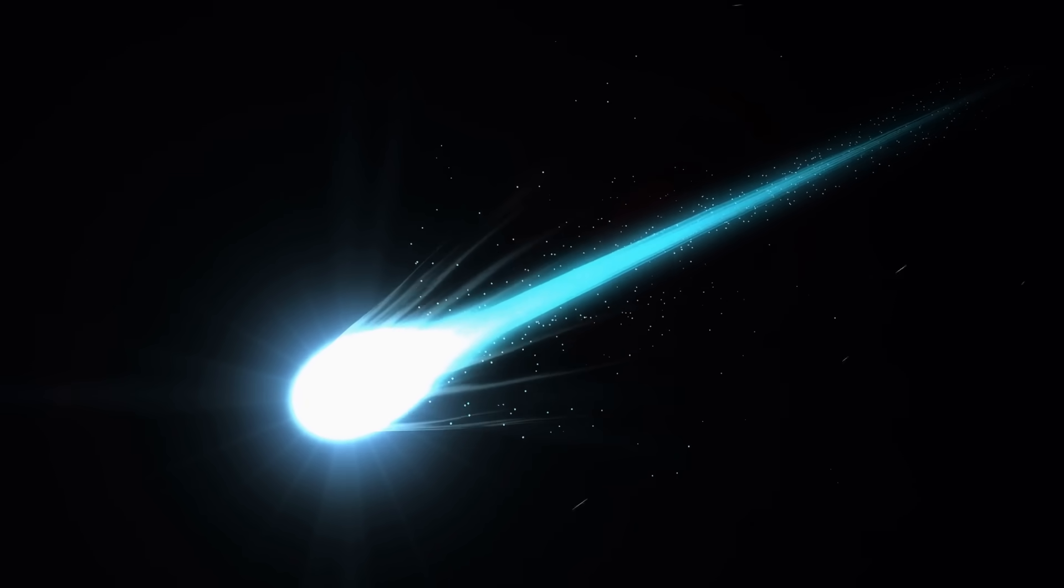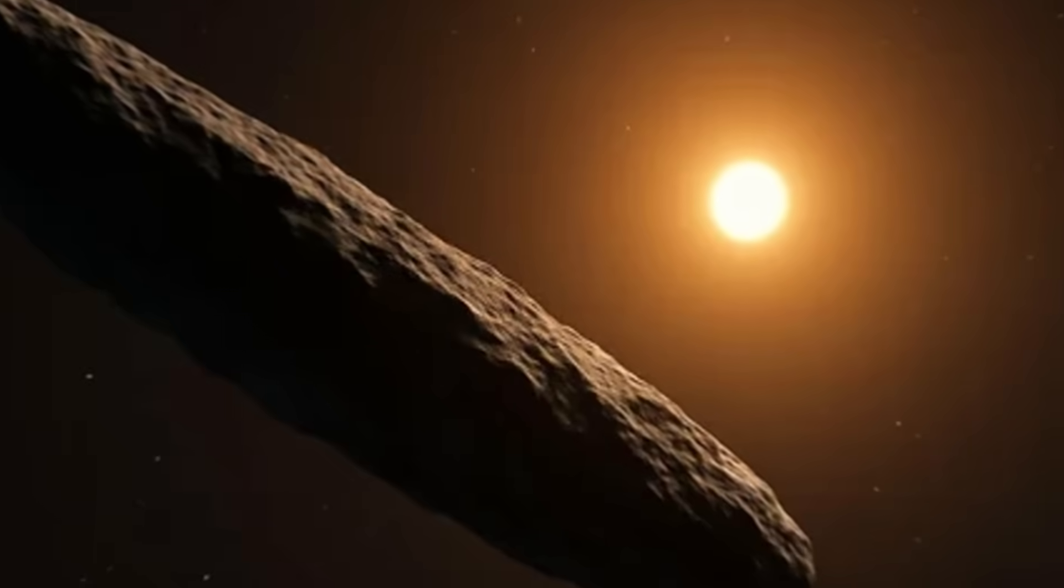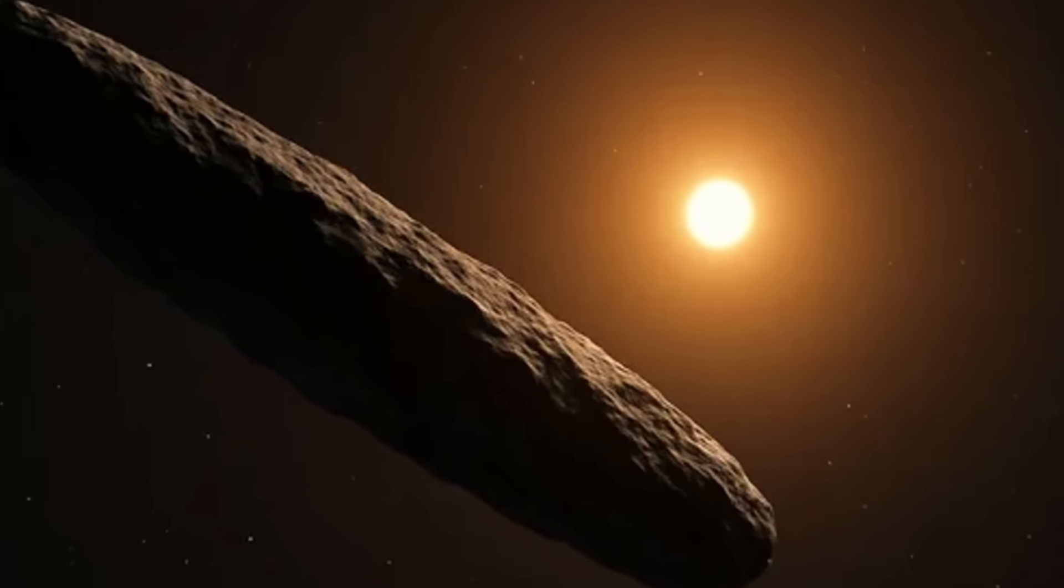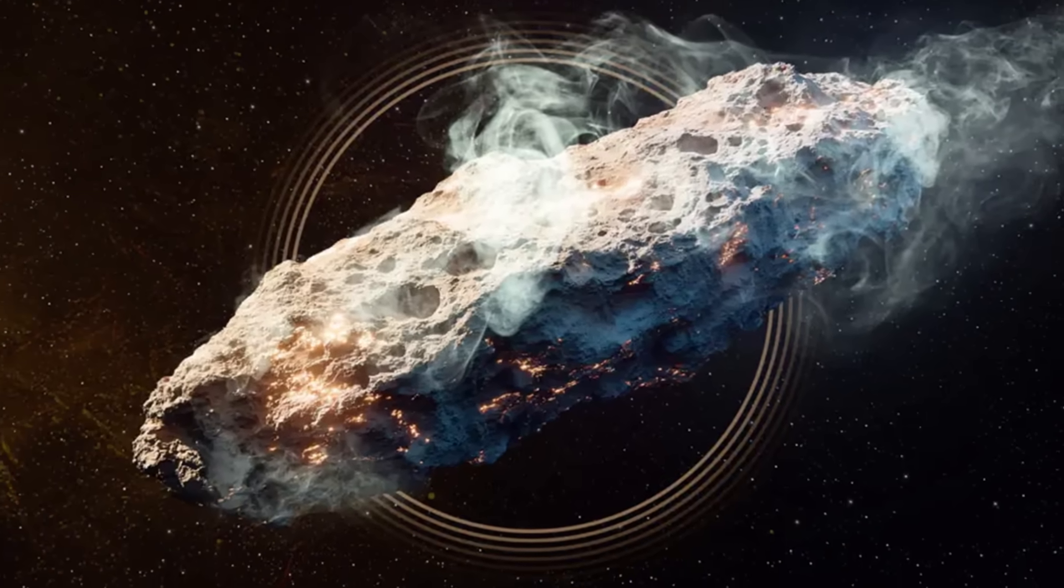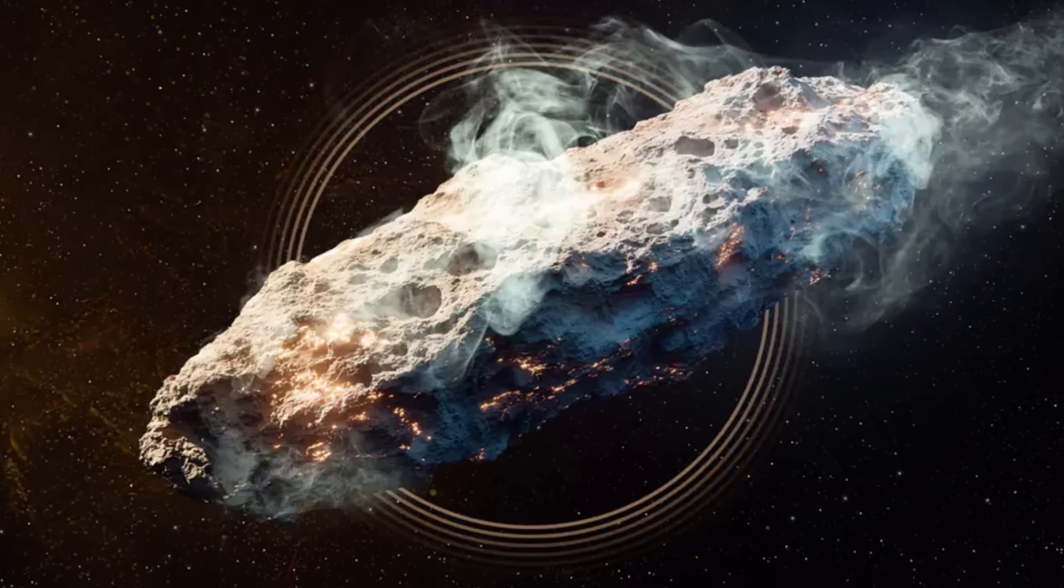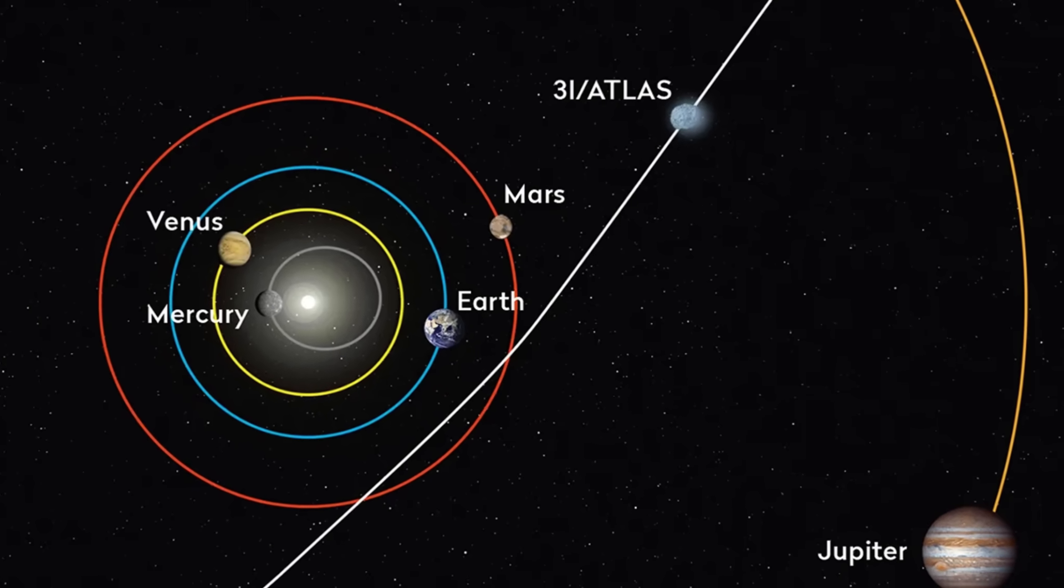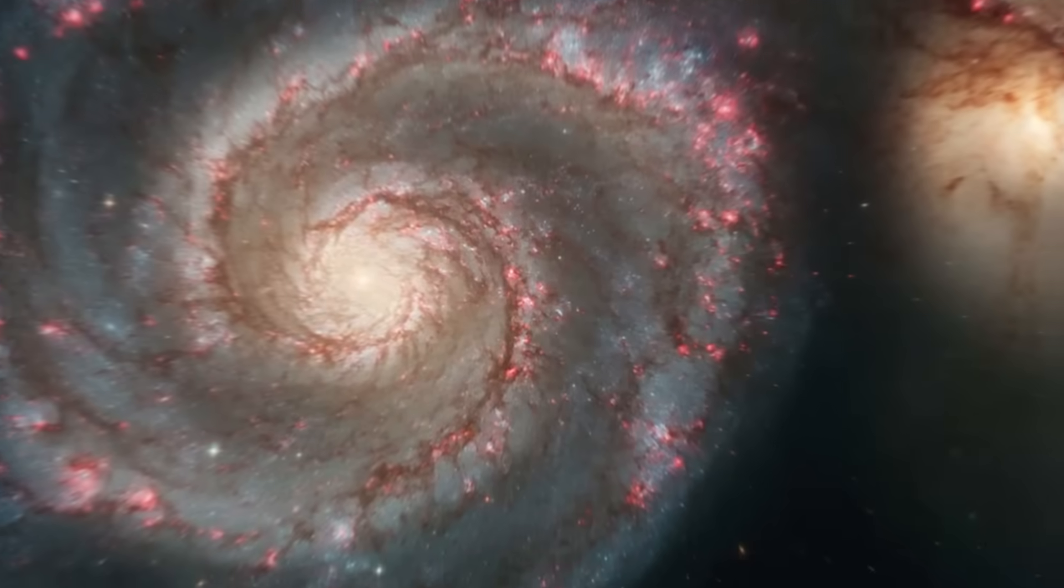The facts, at least for now, remain firm. Comet 3i Atlas is undeniably real, a genuine traveler from beyond our solar system. Its interstellar origin is not in question. It is a messenger from another star, carrying with it the raw, unaltered ingredients of a distant world.